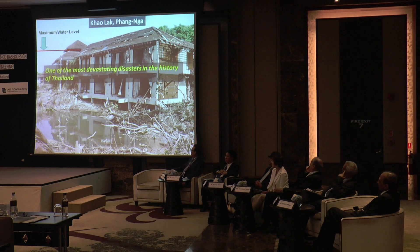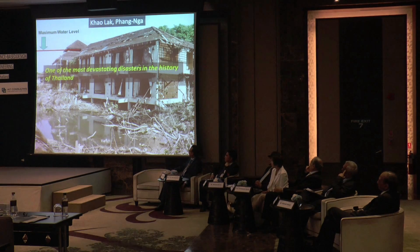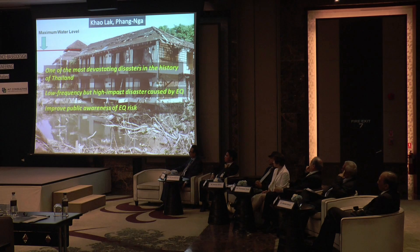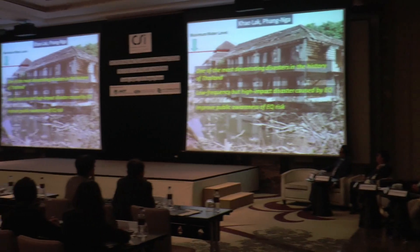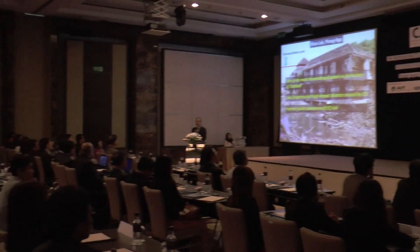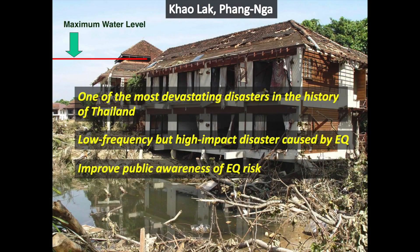This is one of the most devastating disasters in the history of Thailand. It shows one of the key records we call a disaster — an earthquake disaster and tsunami. This type of disaster has very low probability of occurrence, but it can produce a very high impact.